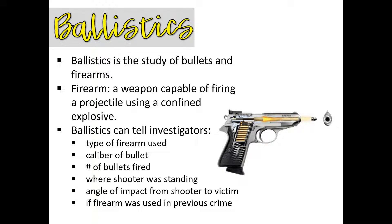Investigators can use ballistics to determine the type of firearm that was used, the caliber of bullet that was fired — and by caliber we mean the diameter of the bore of a rifle or handgun — the number of bullets fired, where a shooter was standing when they fired, the angle of impact from shooter to victim, and whether the firearm was used in a previous crime. These are the major points of ballistics.